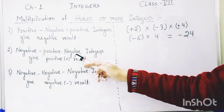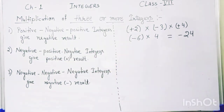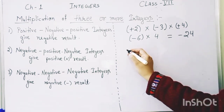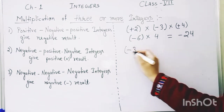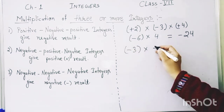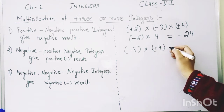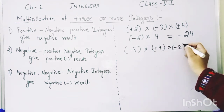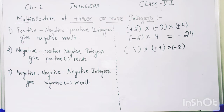Coming to the next rule: numbers having signs negative, positive, and negative. If the three integers are of these types, then the result will always be positive. The example is minus three multiplied by plus four, again multiplied by minus two.